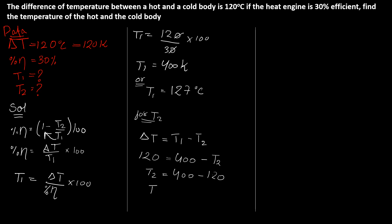So T2, the answer will be in Kelvin, it will be 280 Kelvin. And if I write it in Celsius, it will be 7 degrees Celsius. So the required temperatures, you have T1 is 400 Kelvin or you can say 127 degrees Celsius, and T2 is 280 Kelvin or you can say 7 degrees Celsius.